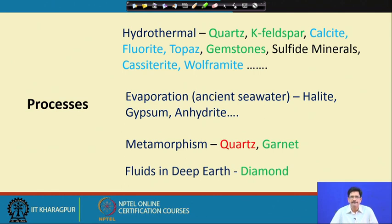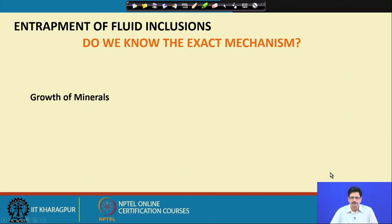We can also study surface-operated evaporation processes by studying inclusions in minerals like halite, gypsum, and anhydrite. We can study them in metamorphic minerals — quartz, garnet, cordierite, and many other metamorphic minerals that recrystallize in the presence of fluid. In deep earth settings, we can see fluid inclusions in diamond.